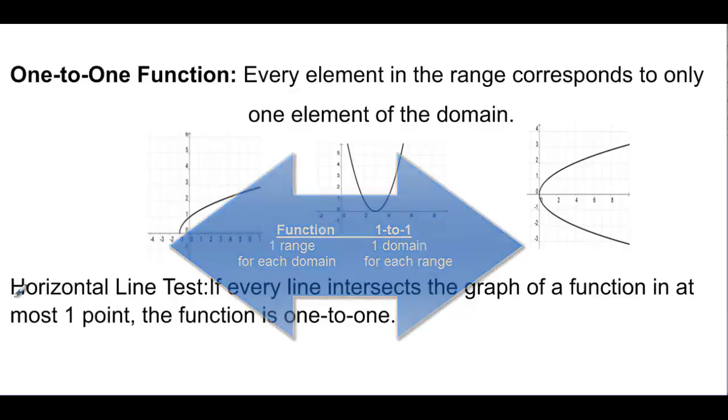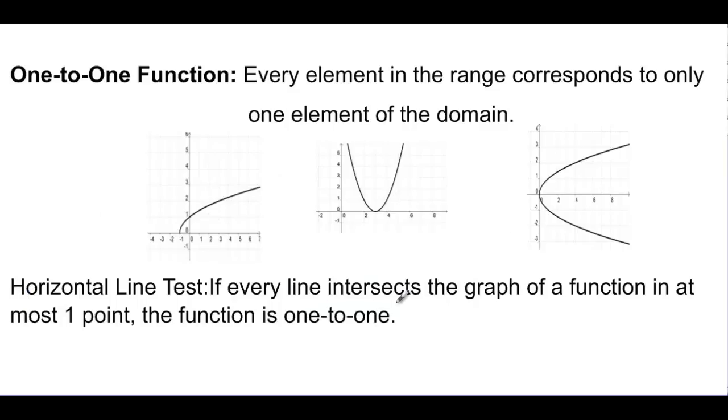And if we look at this, we have the horizontal line test here. If every line intersects the graph of a function at most one point, the function is one-to-one. If you remember to find out that it was a function, we had the vertical line test. So we could go something like this. Now we have the horizontal line test and it says if I go this direction, how many times do I hit my graph? And if I look at this one, I can say that it's one-to-one because it passes that horizontal line test.